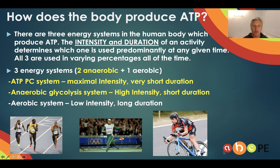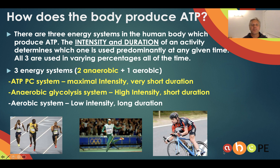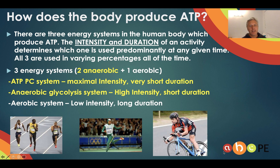So how does the body produce ATP? The energy systems do it. There are three energy systems, and which one we use is totally dependent on the intensity and the duration of the activity we're doing at the time. All three are always used — it's just a matter of what percentage they're used at any given time. We've got two anaerobic energy systems that don't need oxygen, and one aerobic energy system that requires oxygen. You can see under what circumstances we would use each energy system. We're going to go into each one in greater detail now.